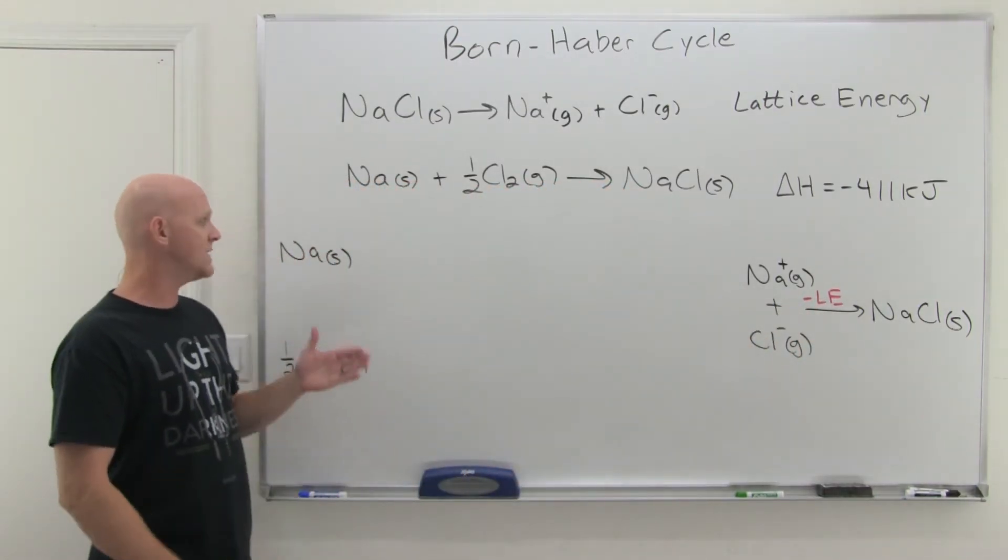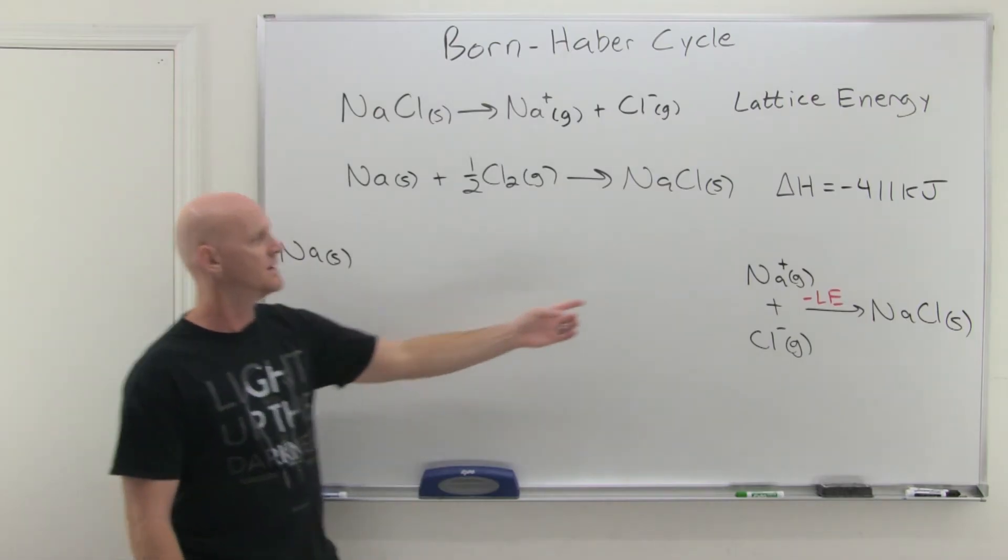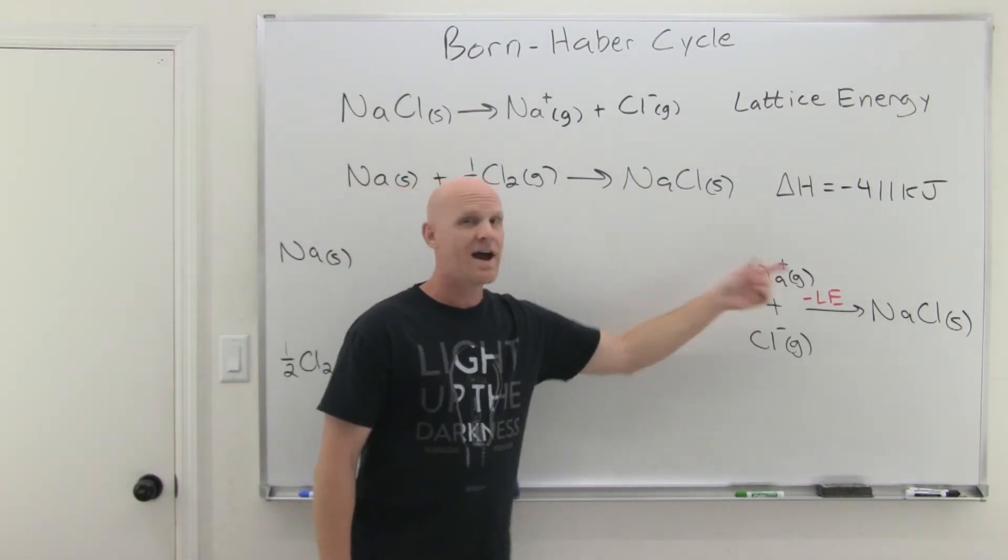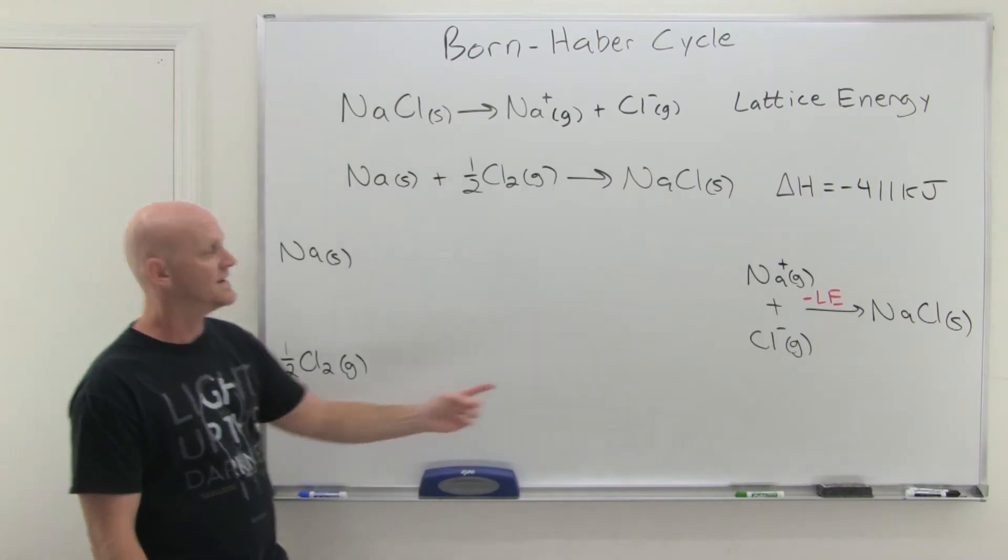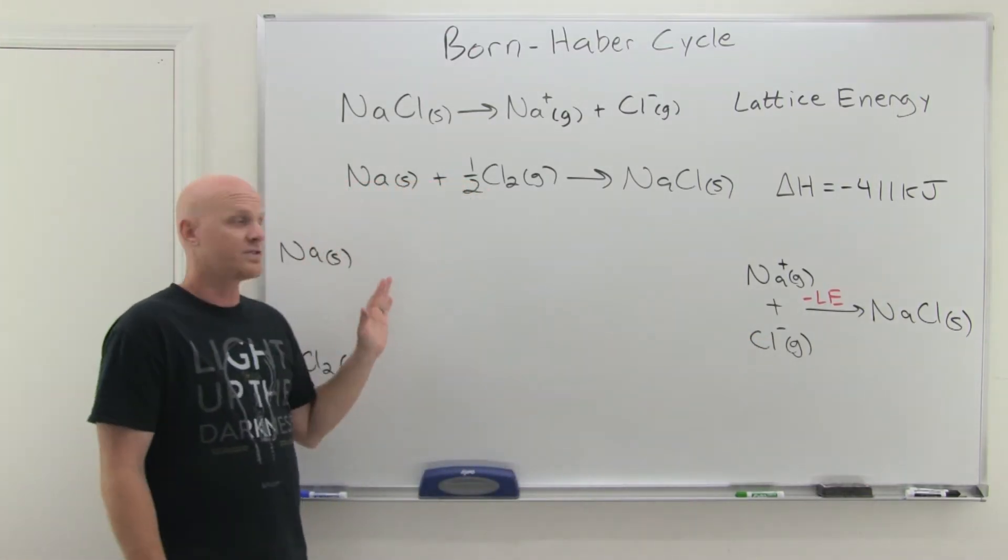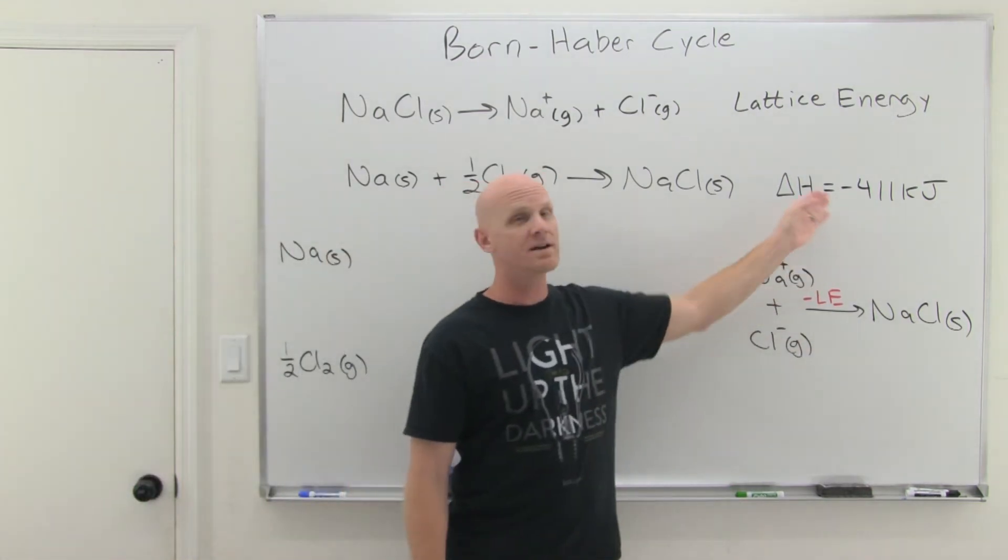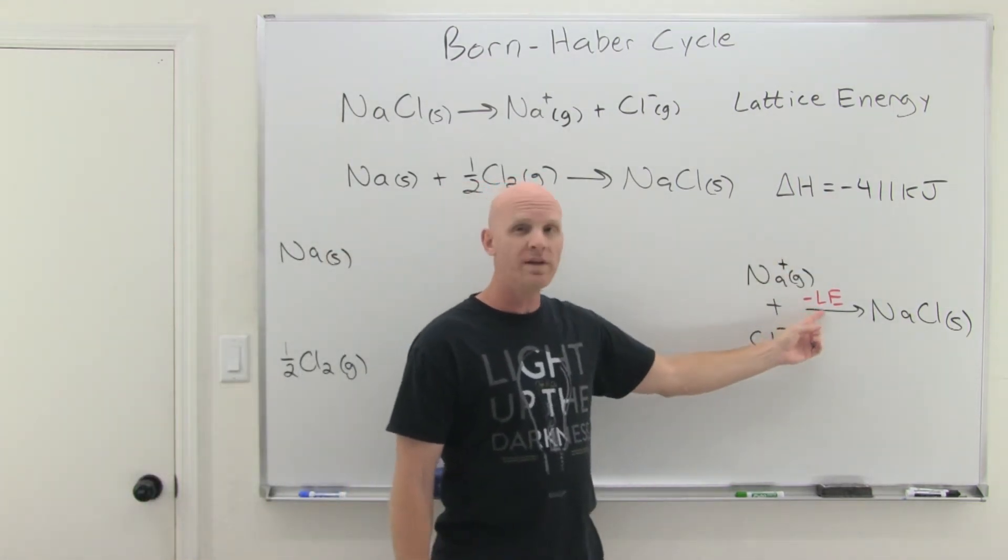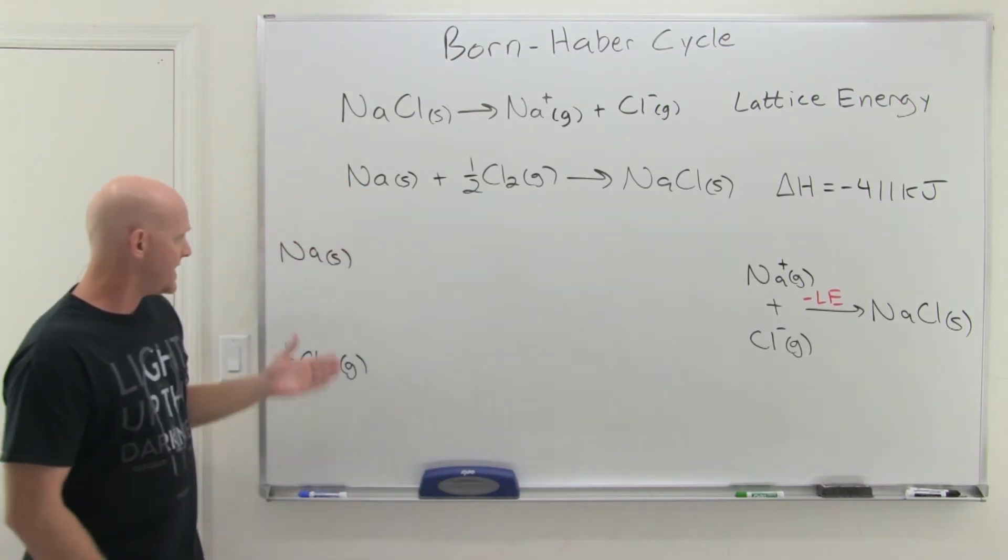The rest of this really then comes down to just turning sodium solid into sodium ions that are gaseous and turning diatomic chlorine gas into gaseous chloride ions. And then we're done, actually. And we'll just add up all the steps, and they're going to add up to negative 411, and this will be the only one we don't know.